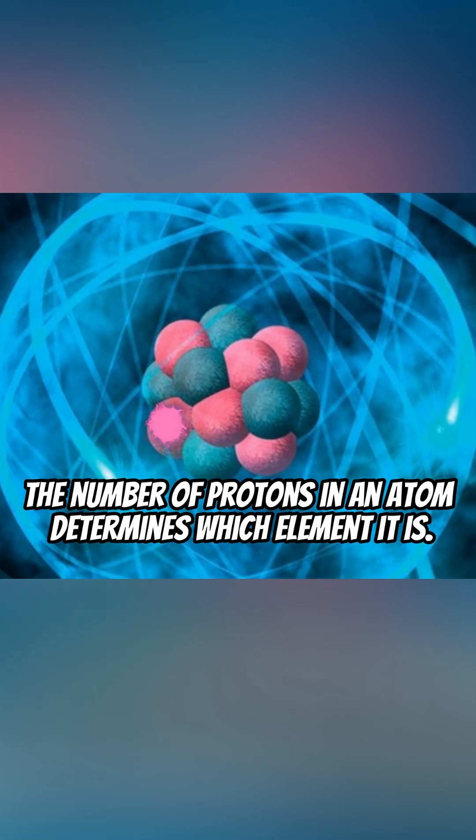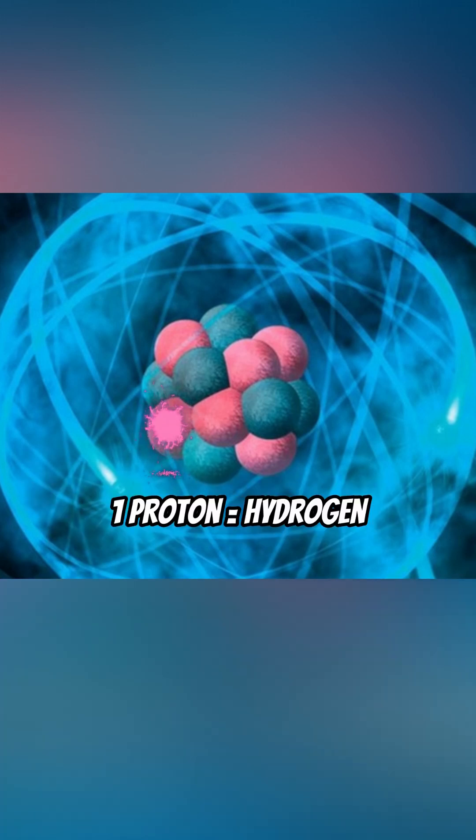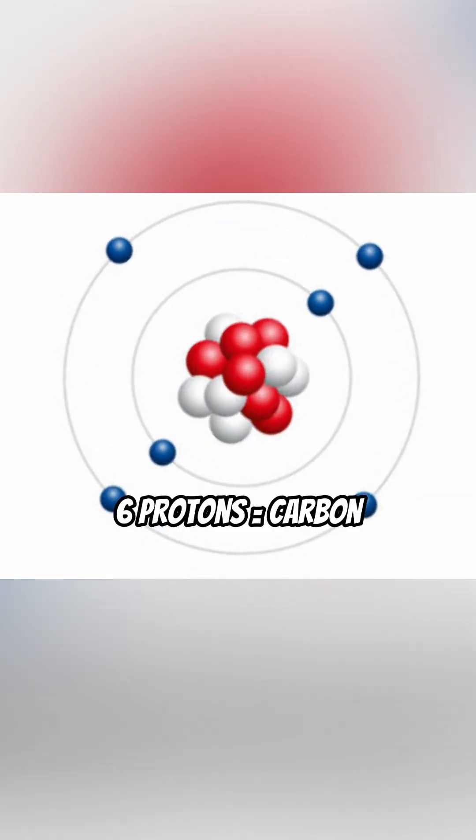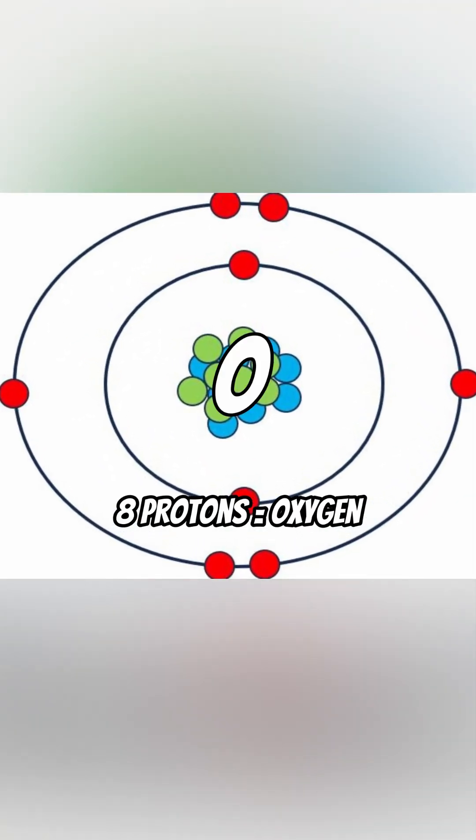The number of protons in an atom determines which element it is. For example, one proton equals hydrogen, six protons equals carbon, eight protons equals oxygen.